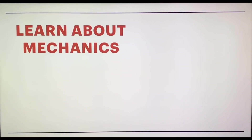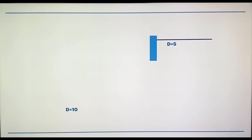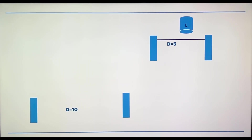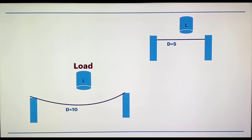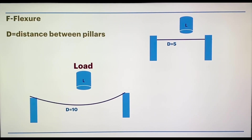To understand the topic, we will first have to take an idea of mechanics. Let's consider a bridge. In the first condition, you will see there is a bridge with support at a distance of 5 meters loaded by load L. In the second condition, there is a bridge at a distance of 10 meters loaded by the same load L. When you consider the bending moment in the first condition, it is very less, while the bending moment in the second condition has increased exponentially.